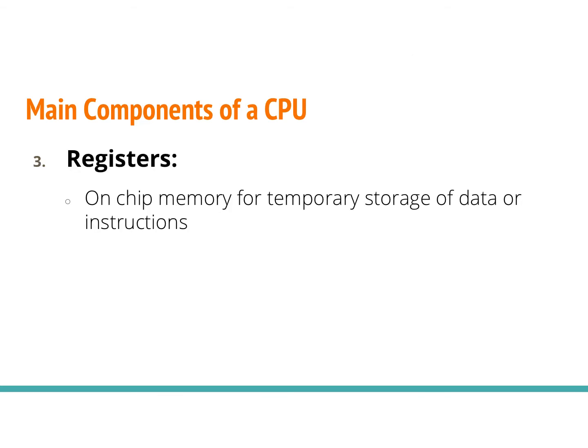The third part of the CPU is the registers. This is on-chip memory — it's right on your silicon chip. You need to remember that this is just temporary storage, not permanent. It's not a place where you would store permanent information; it's just containing data or instructions being used in the moment. Once you close out of them or shut down your computer, they are gone.